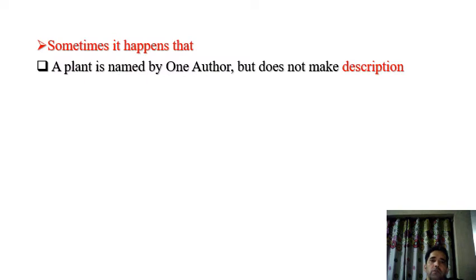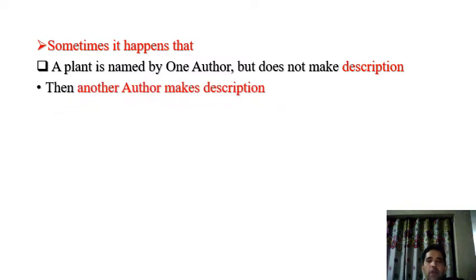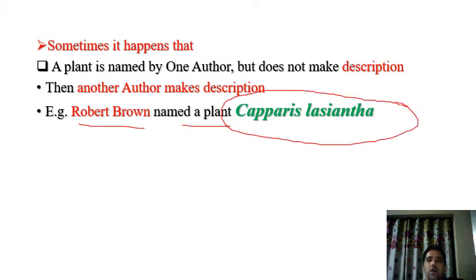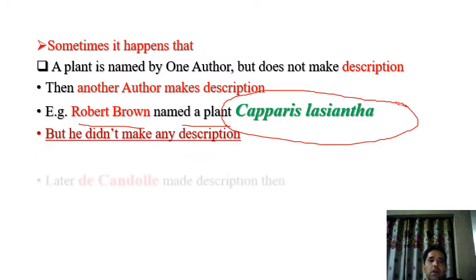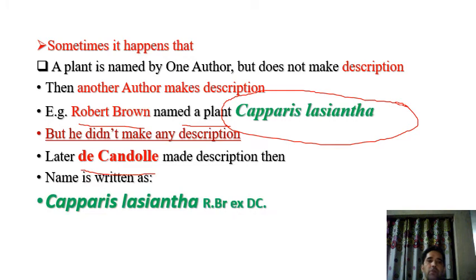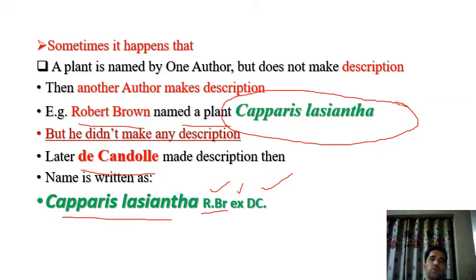Sometimes it happens that one plant is named by one author but he makes no description, and then another author makes the description. For example, Robert Brown named this plant Capparis lasioantha but made no description. Later, another scientist, De Candolle, who was a taxonomist, made the description. In this case the name is written as Capparis lasioantha R.Br. ex DC.